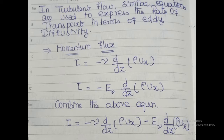Here e_nu is the eddy diffusivity for momentum. This is called turbulent flow or irregular flow where Reynolds number is greater than 4000. This is in contrast to viscous or laminar flow. That is why, instead of momentum diffusivity, we use eddy diffusivity here.